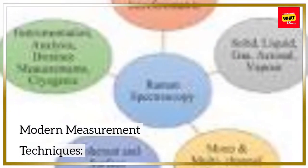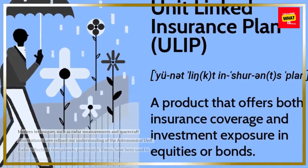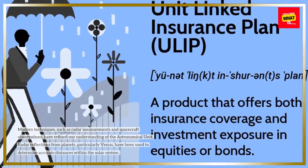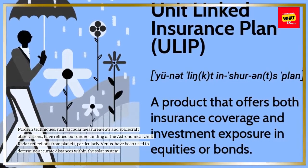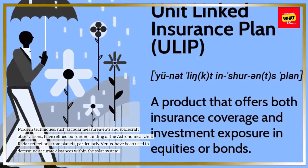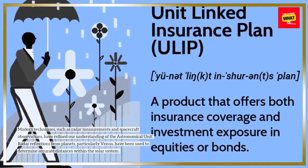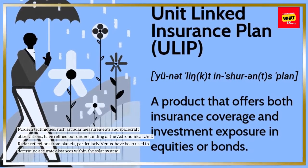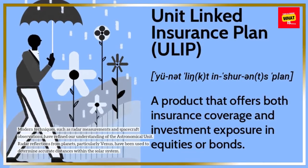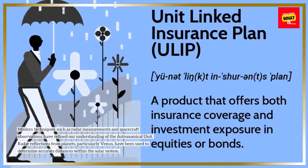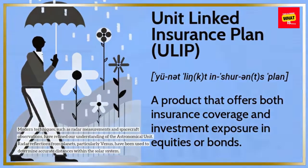Modern Measurement Techniques: Modern techniques, such as radar measurements and spacecraft observations, have refined our understanding of the astronomical unit. Radar reflections from planets, particularly Venus, have been used to determine accurate distances within the solar system.